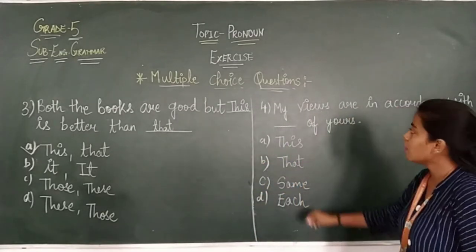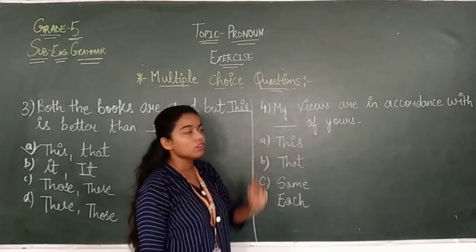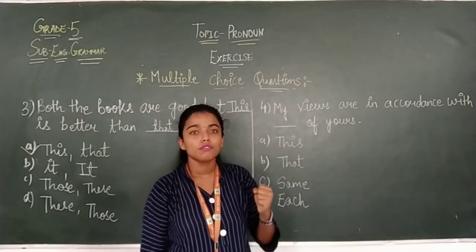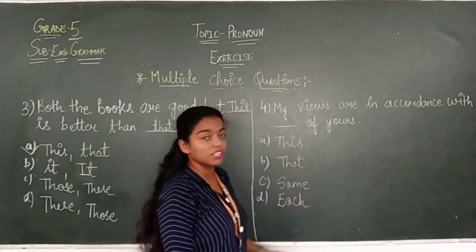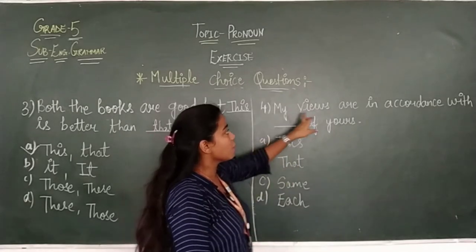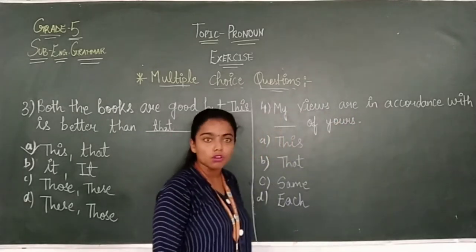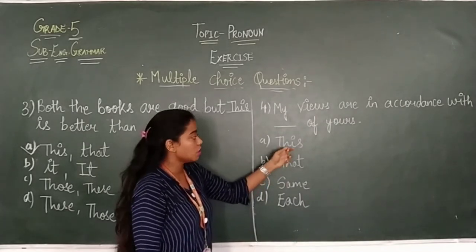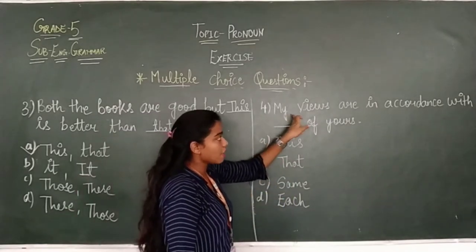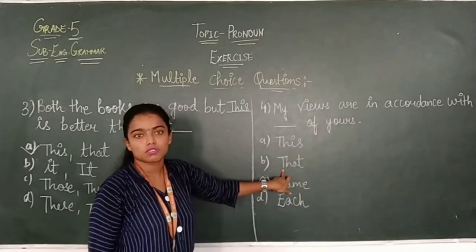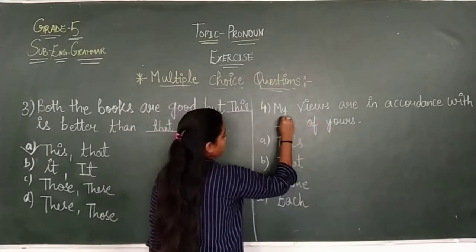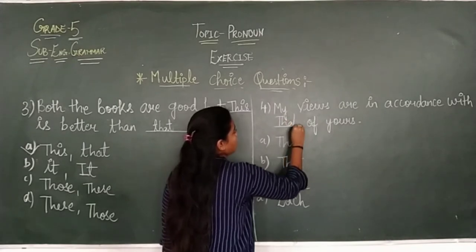In the fourth number, my views are in accordance with of yours. So here also, they are showing the comparison. Views means thinking. So which pronoun we will use? Options are given: this, that, same or each. My views are in accordance with that of yours. So we will use that.